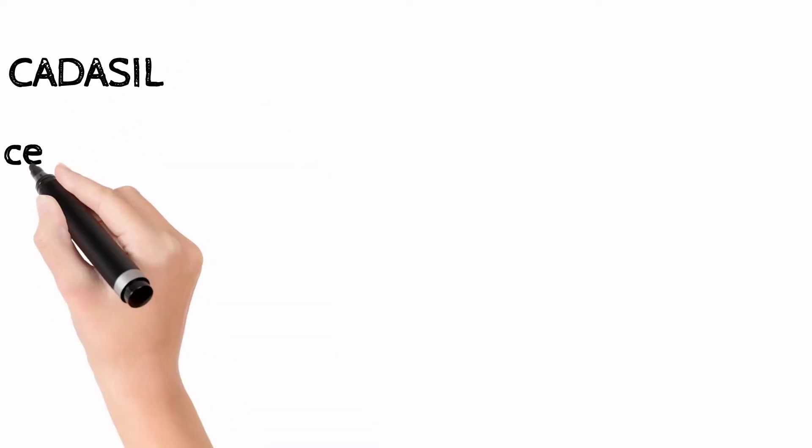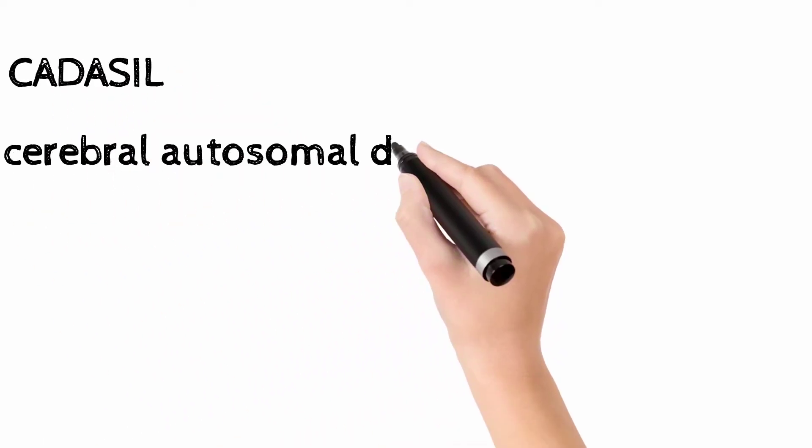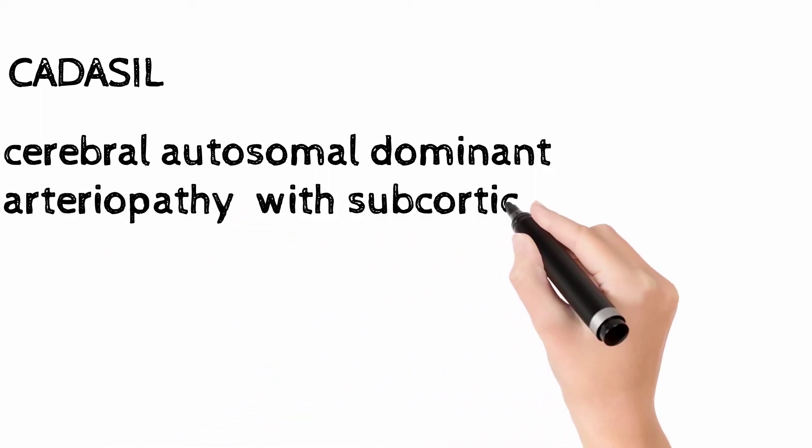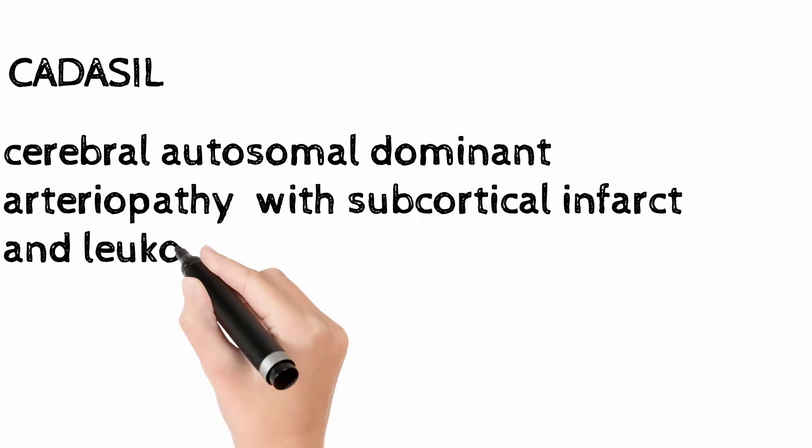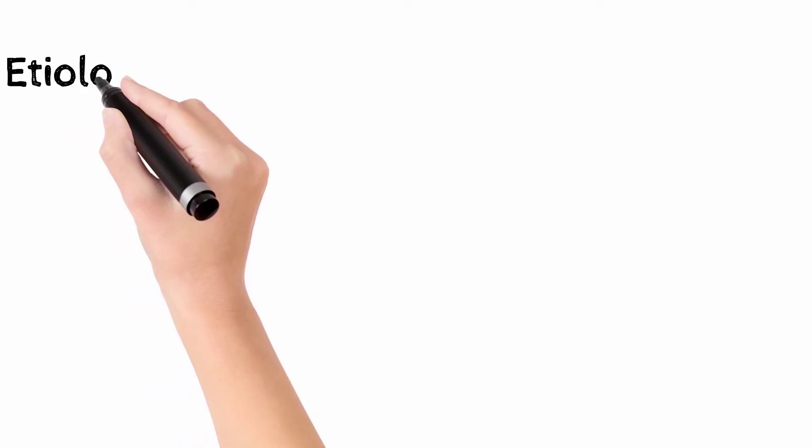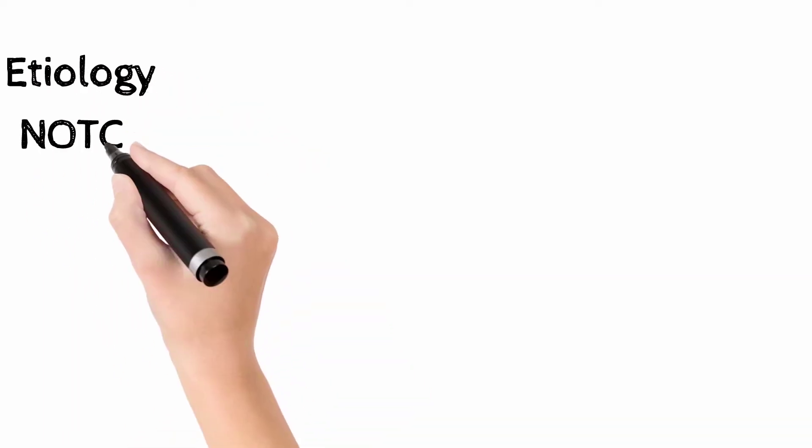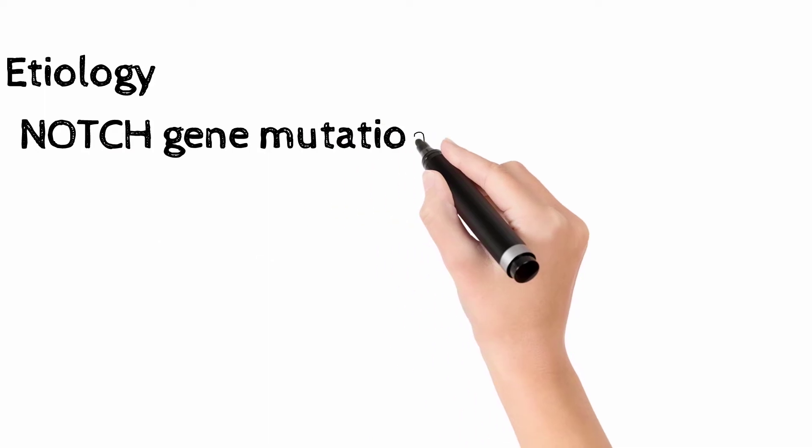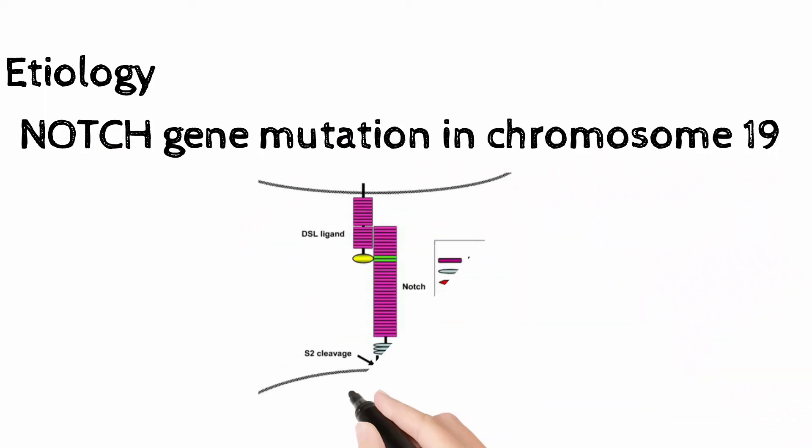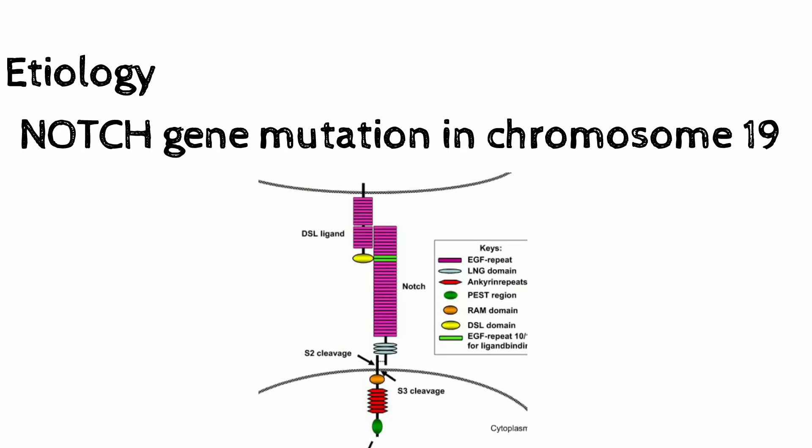Dear friends, today let's discuss CADASIL. It is cerebral autosomal dominant arteriopathy with subcortical infarct and leukoencephalopathy. The etiology for this condition, CADASIL, is the NOTCH gene mutation that occurs on chromosome number 19.